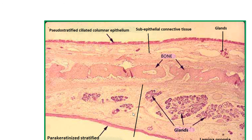This is the oral portion of the hard palate. This is the lining epithelium — parakeratinized stratified squamous epithelium. This is the lamina propria; this connective tissue contains glands because this is the cross-section of the glandular part of the hard palate. And this is the dense connective tissue containing more reticular fibers, which tightly binds with the periosteum of the bones of the hard palate.